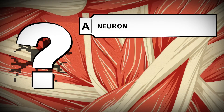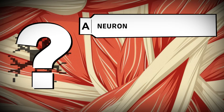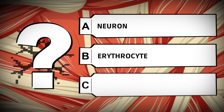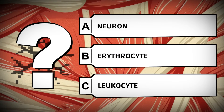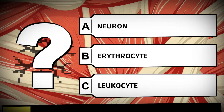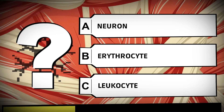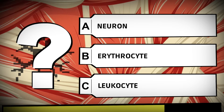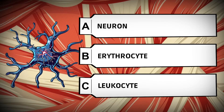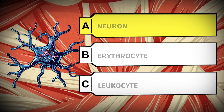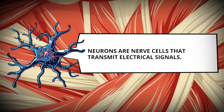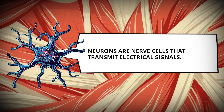Which type of nerve cell transmits signals? Neuron. Erythrocyte. Leukocyte. Neurons are nerve cells that transmit electrical signals.